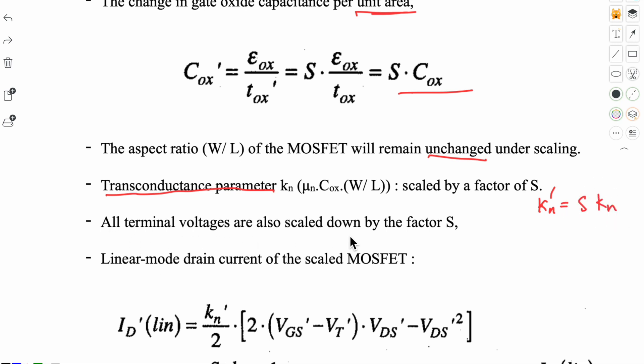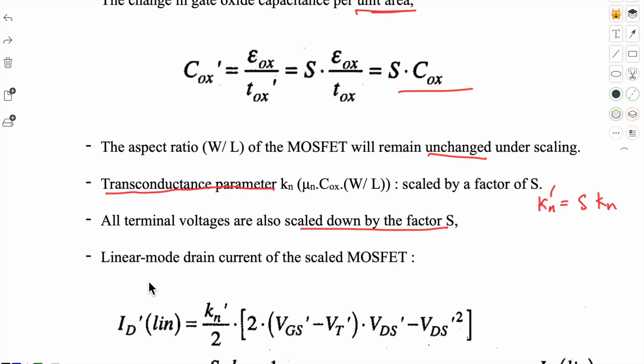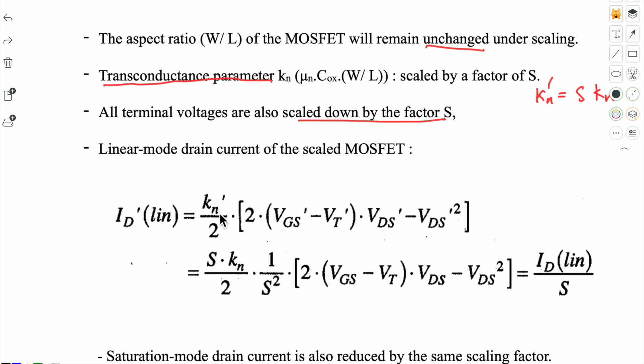And all the terminal voltages are also scaled down by a factor of S, as we have seen. Now let's look at the drain current in linear mode. The equation can be written as: the new drain current equation will be this. If we place each value, new k_n dash will be S times k_n, and the voltages are in products, so we take S squared as common, and ultimately we can see that this new drain current in linear mode is scaled down by factor S.